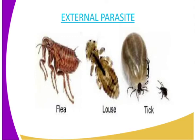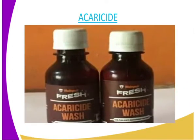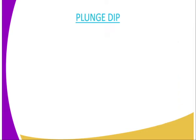We have three external parasites. We have the louse and also we have the tick. Acaricide is a chemical that is normally bought from the agrochemicals, with an aim of diluting it and to be used in a dip or to be sprayed onto livestock with an aim of controlling external parasites.